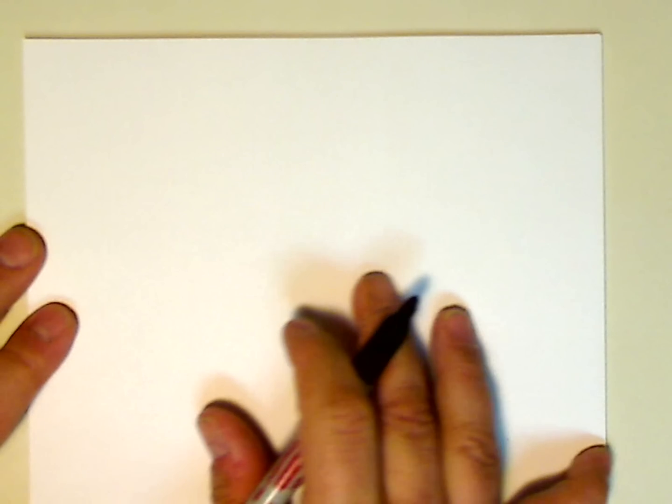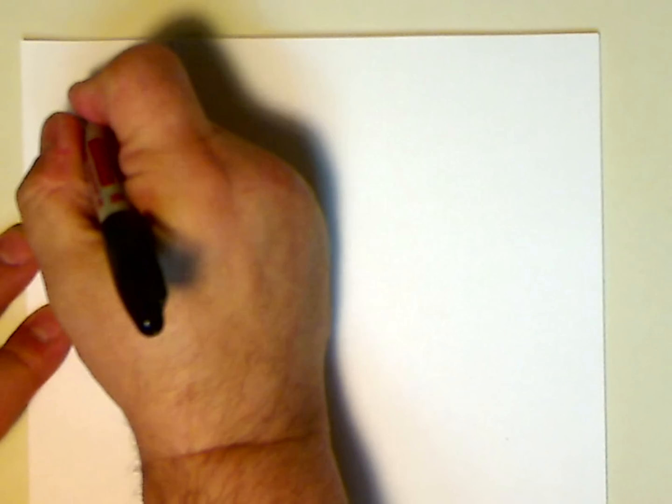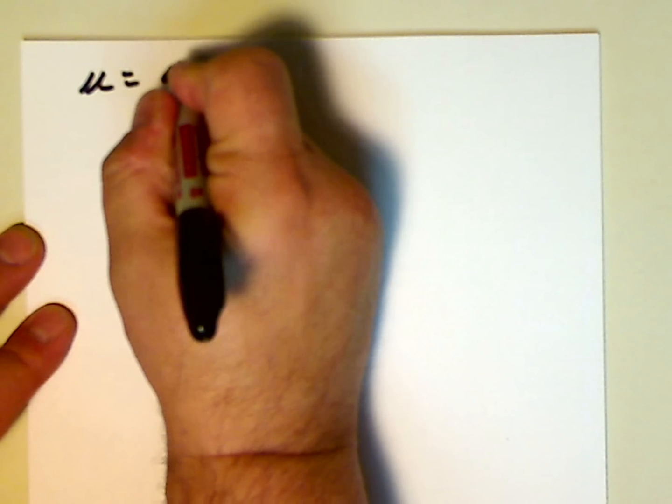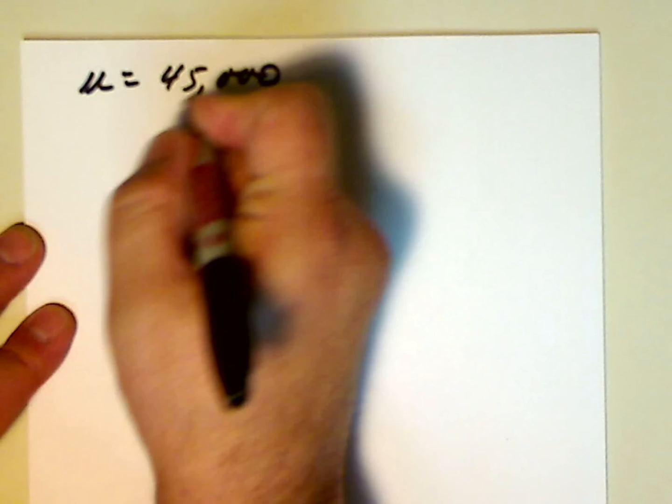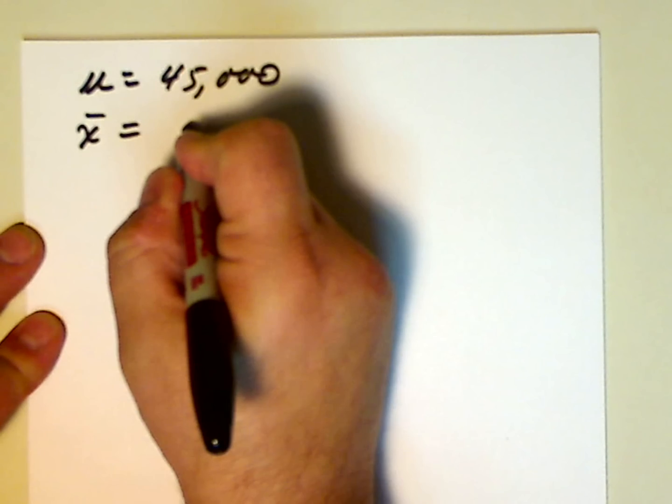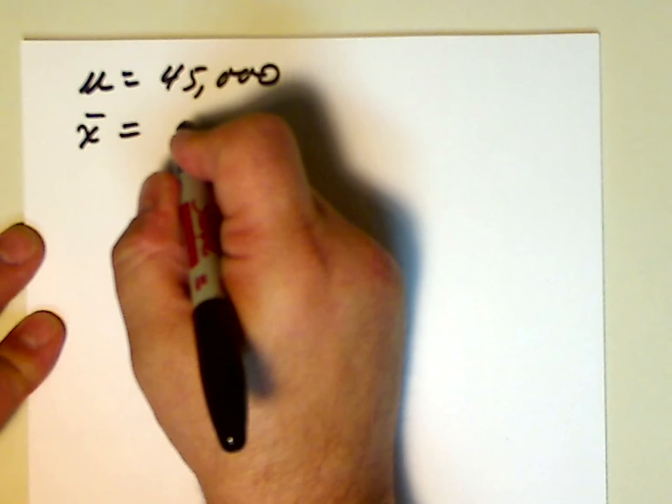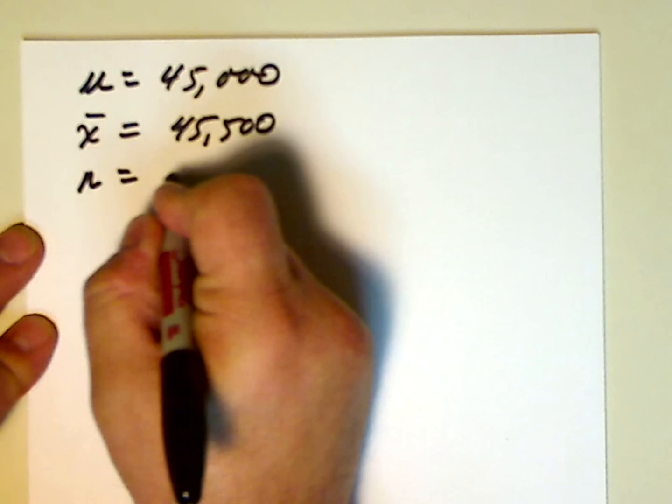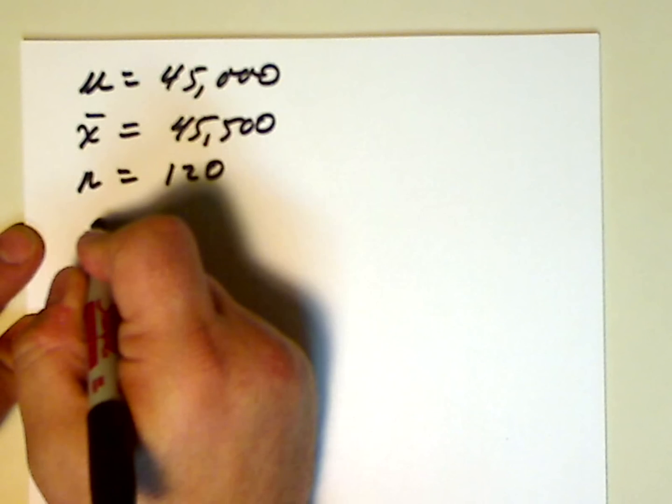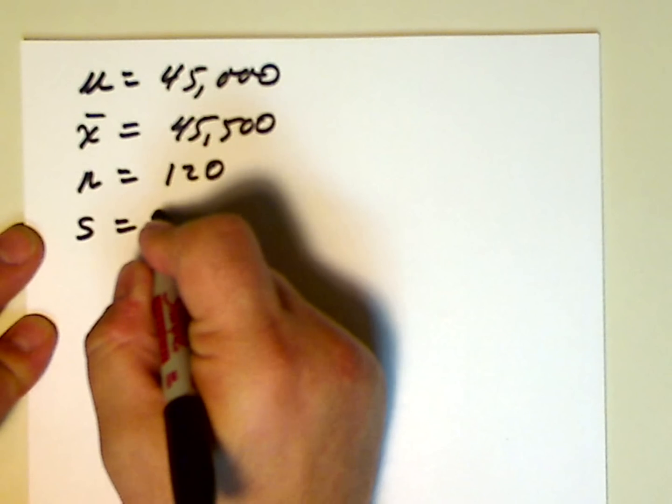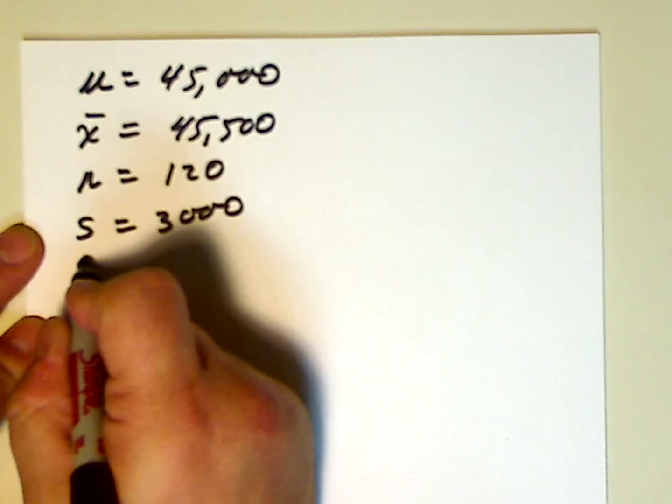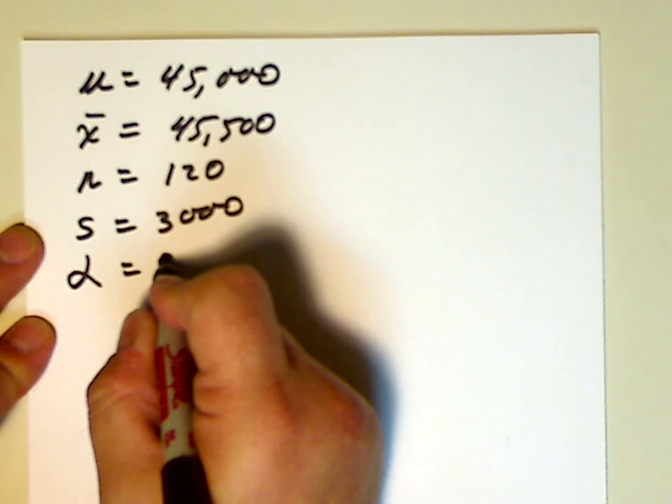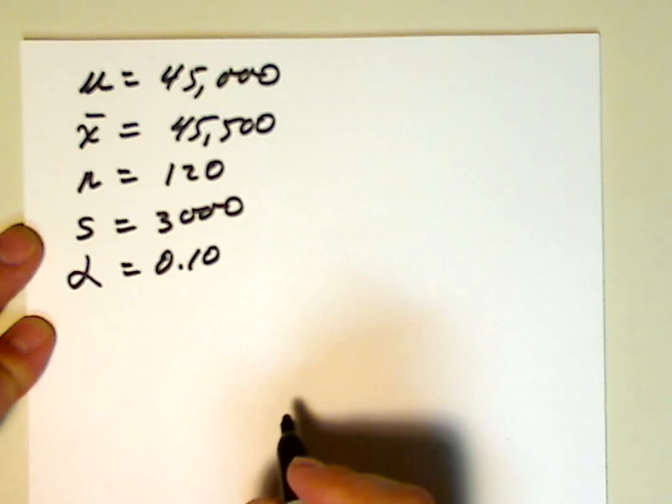We want to list the relevant information. So, μ, the population mean, is $45,000. x̄, the sample mean, is $45,500. The sample size was 120. The standard deviation s is $3,000. And we're working to the 10% level of significance.